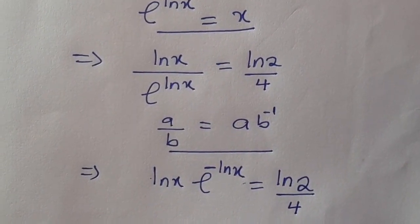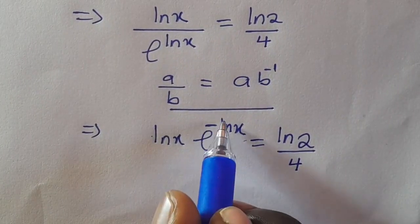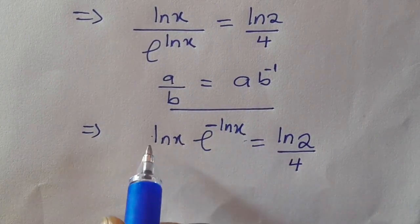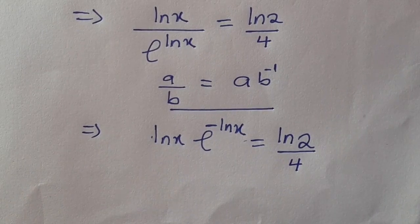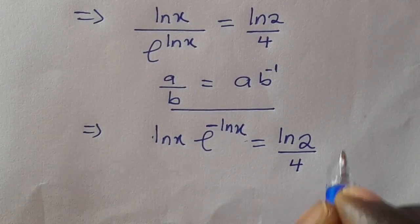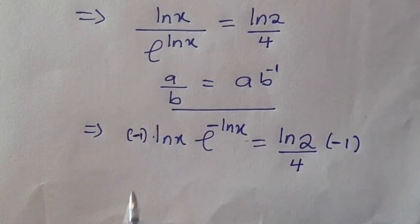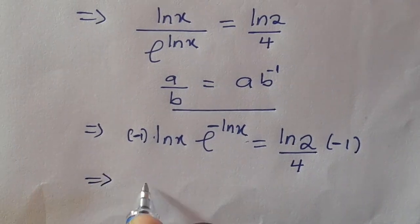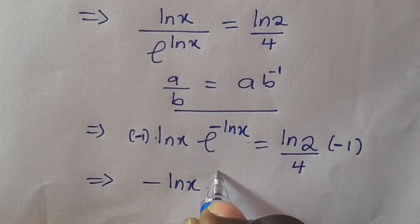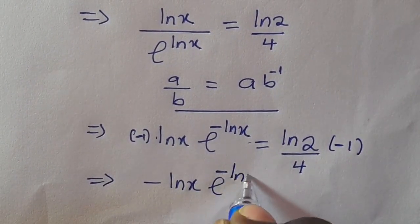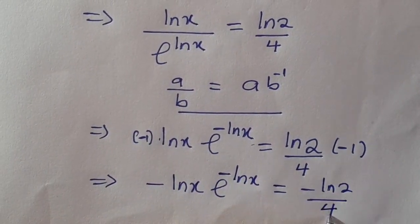So guys, let us make sure that we have minus ln(x) here, then let us multiply through by minus 1 and see what will happen. When we multiply through by minus 1, we are going to have: e raised to minus ln(x) equals minus ln(2) divided by 4.